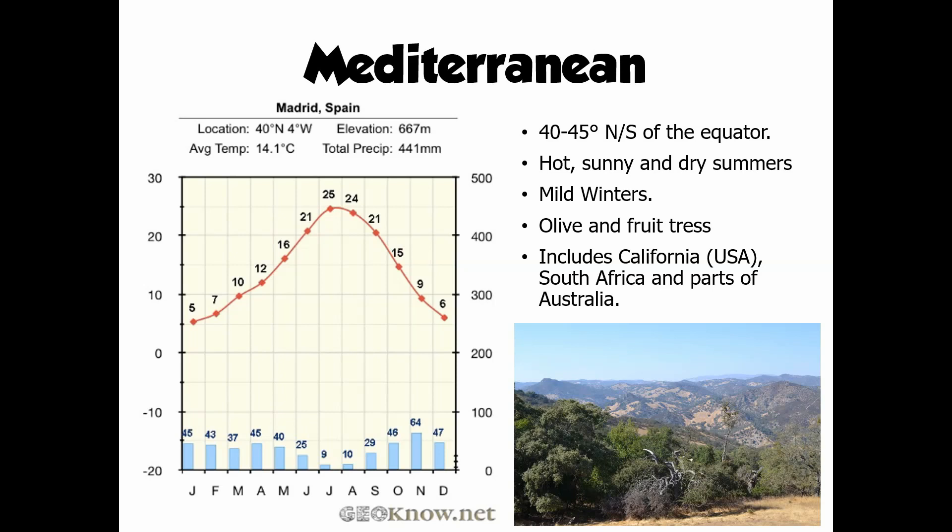The kinds of vegetation found here include olive trees and fruit trees like lemons and oranges. And although we call it the Mediterranean biome, it's not purely found in southern Europe — California has a very similar climate, as do parts of South Africa and parts of Australia, which share these kinds of characteristics.